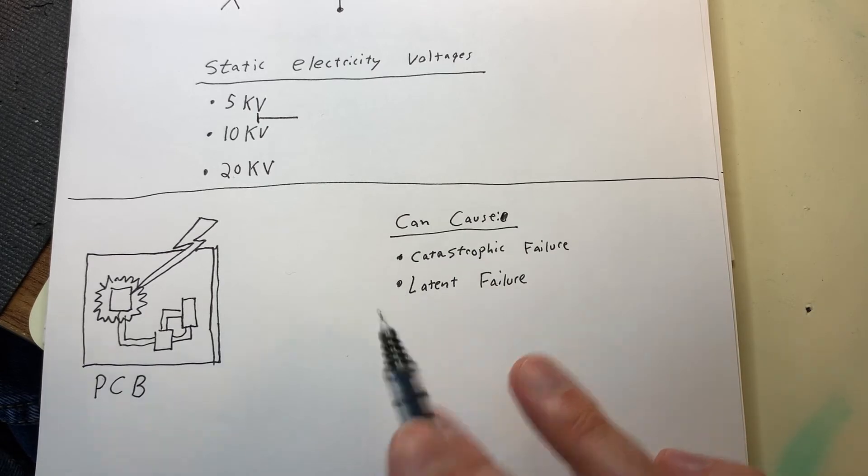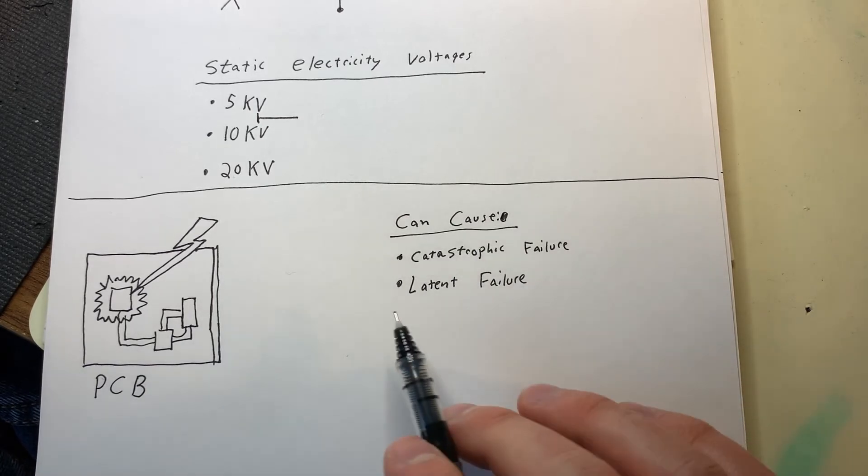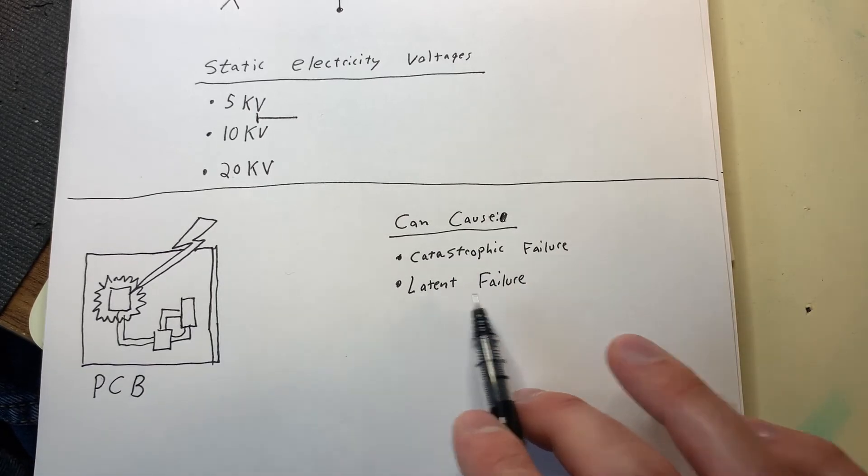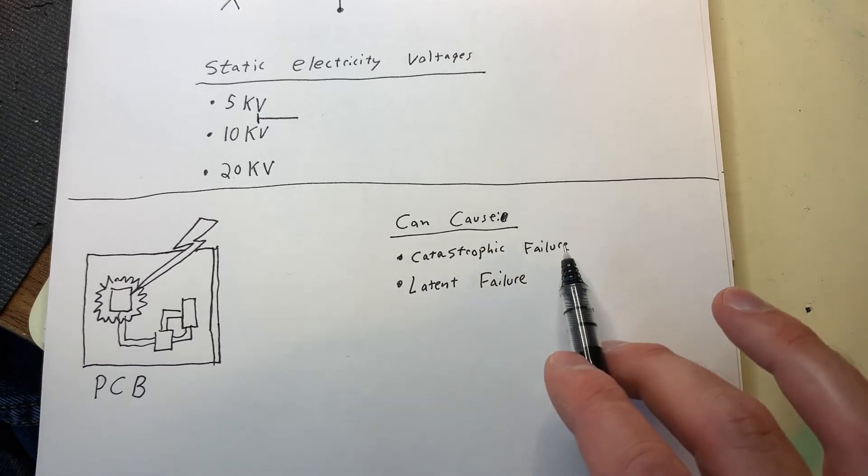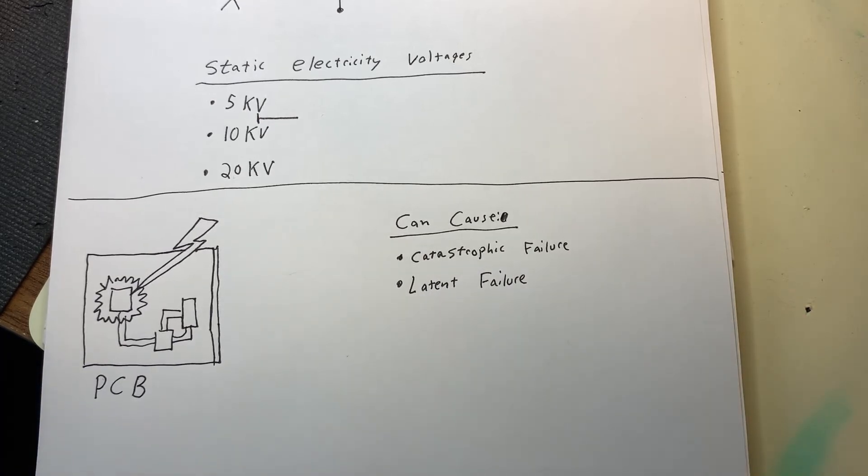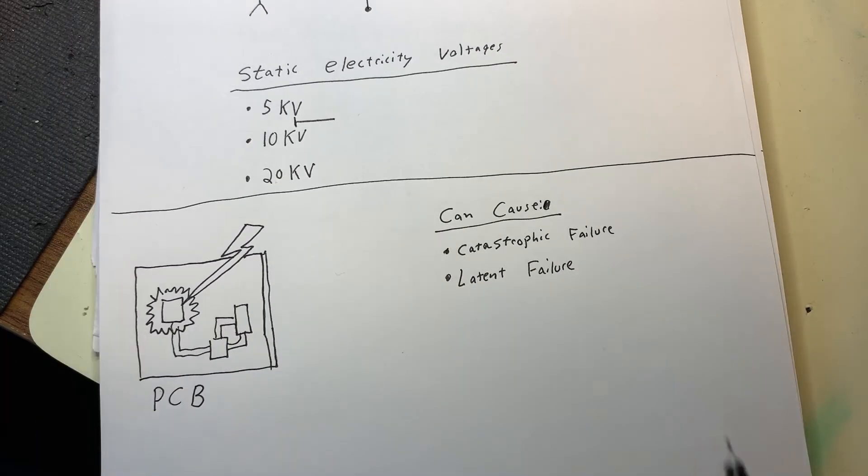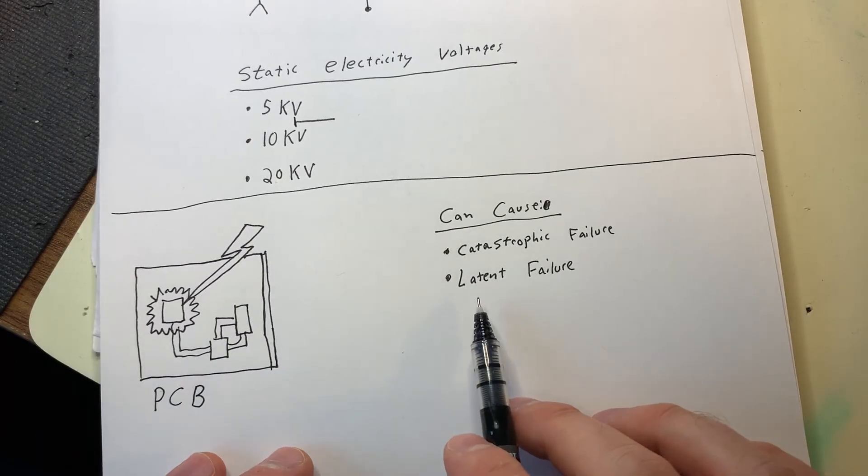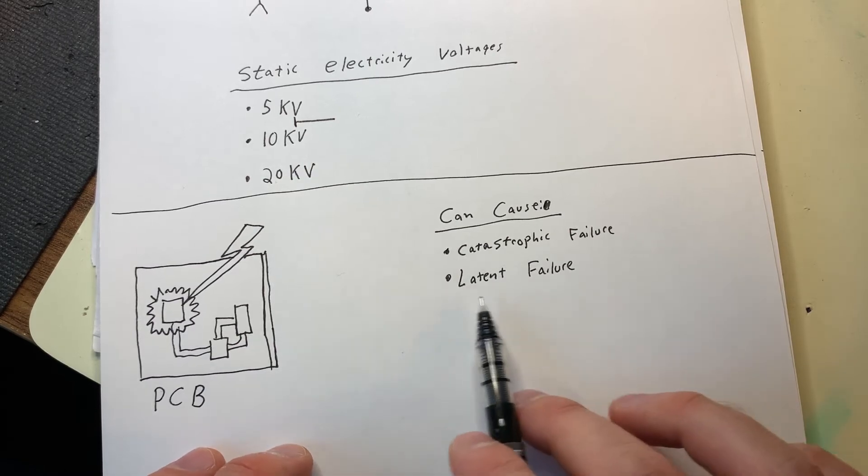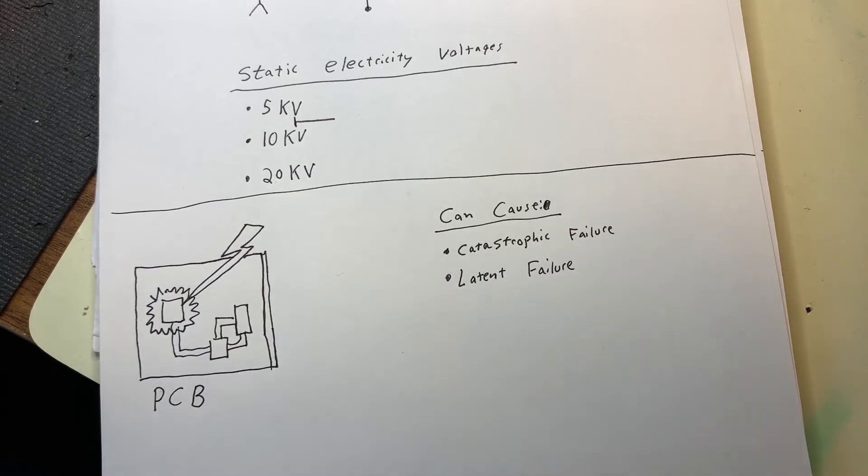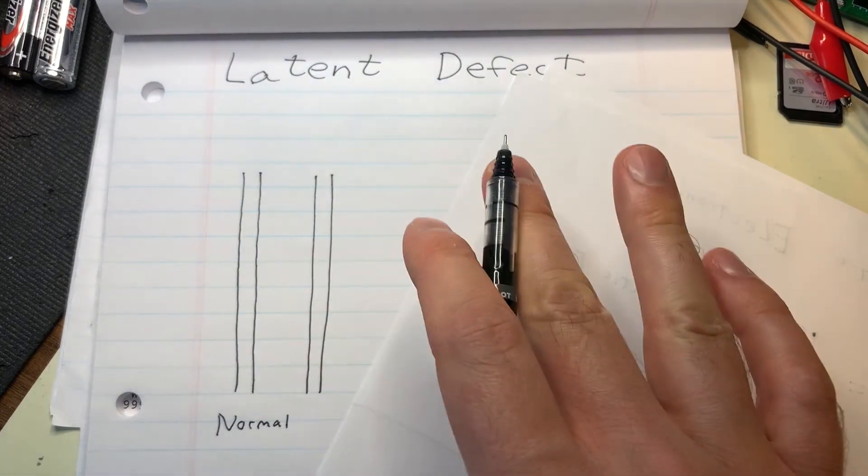Specifically, it can cause usually two different types of damage. One is catastrophic failure, one is latent failure. Catastrophic failure is pretty obvious. It means that the device immediately stops working, it refuses to function. The other type of failure is the much more common and insidious type, which is called latent failures.